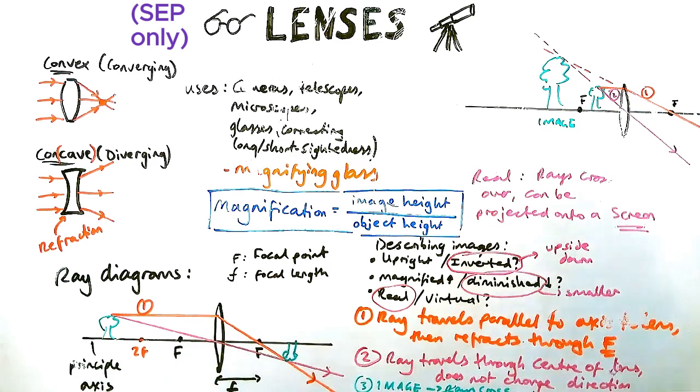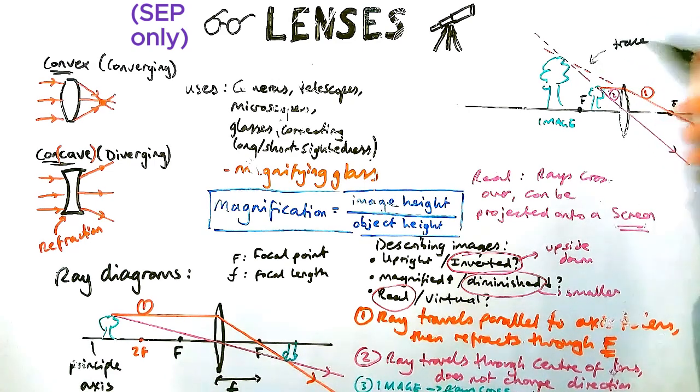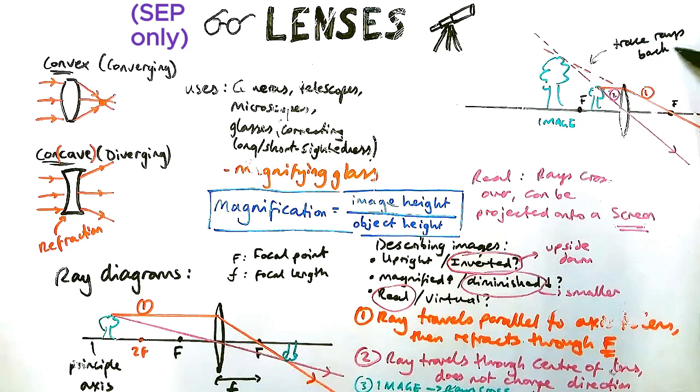Just like a magnifying glass, your brain tricks you into thinking the object is now bigger. So trace the rays back until they cross over. And that's where your image is, behind the lens.